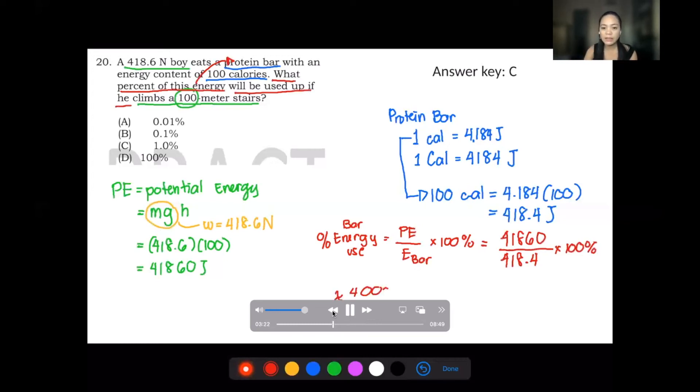And if we divide the 41,860 to the 418, times 100%, we will actually get 10,000% or simply all, lahat. So the answer here will be 100%, which is not the answer in the answer key.